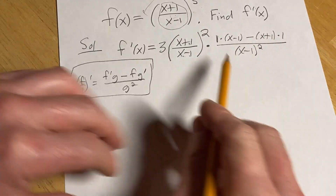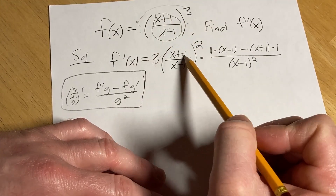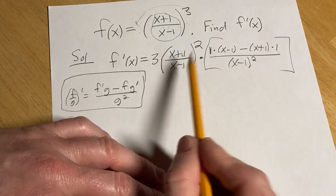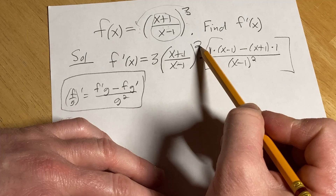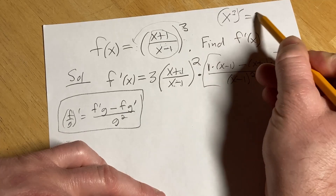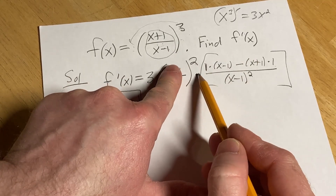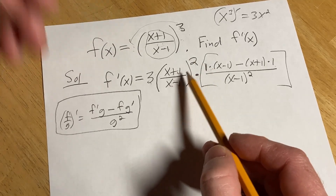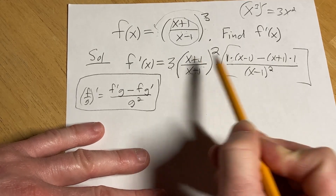Let's go through that again. Taking this derivative, we're using the chain rule, which says you take the derivative of the outside, leave the inside untouched, and then multiply by the derivative of the inside. So all of this is the derivative of the inside using the quotient rule. Taking the derivative of the outside, we use the power rule: bring the number down and subtract 1 from the exponent. So if it was x cubed, the derivative would be 3x squared — that's the x here. The chain rule says multiply by the derivative of the inside piece, which is a quotient, so we use the quotient rule: derivative of the top times the bottom minus the top times the derivative of the bottom, over the bottom squared.